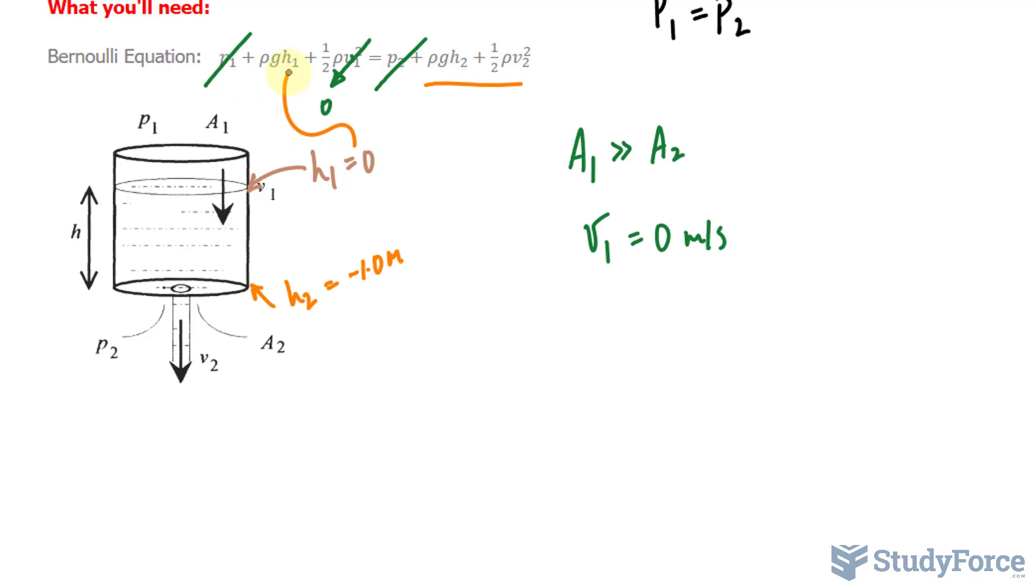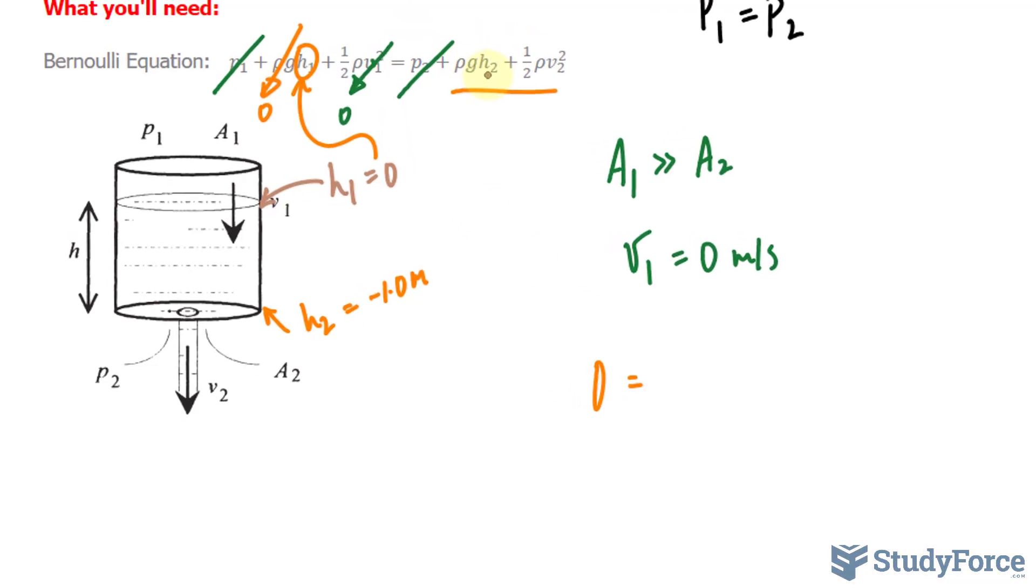Okay. Substituting 0 into this factor H sub 1 makes this term go to 0, leaving us with an equation that has the left side completely equal to 0 and the right side equaling to these two terms. Let's discuss what those terms are.